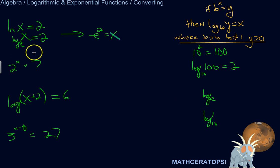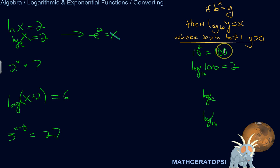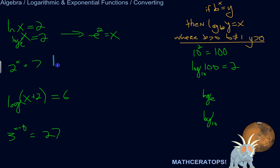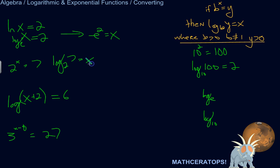Let's start with an exponential function: 2 to the x equals 7. This is like 10 squared equals 100. Log asks the question: to what power do I need to raise the base, 2, to turn it into this number, 7? And x is the power I need to raise to turn it into 7. So log base 2 of 7 equals x.